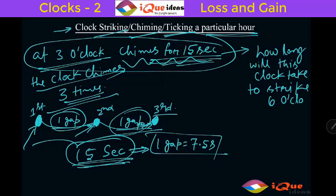At 6 o'clock the total number of strikes is 6. 1, 2, 3, 4, 5, 6. Now what is the number of gaps? Count it.